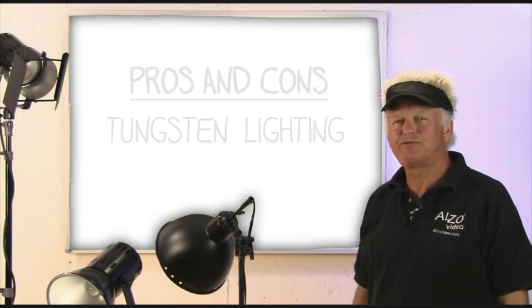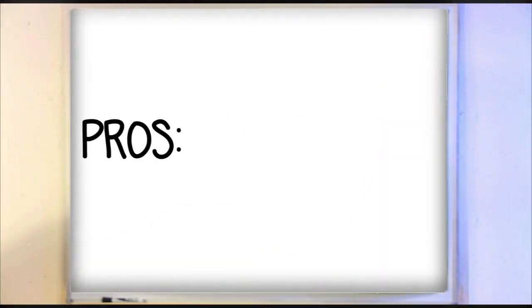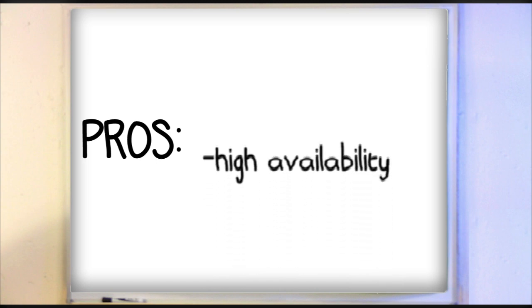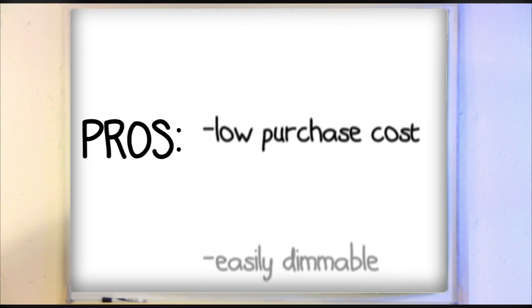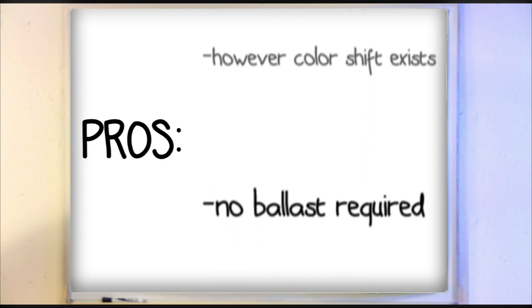Now let's review the pros and cons of tungsten lighting. The pros are high availability and low purchase cost. They're easily dimmable, but of course they do color shift and there is no ballast required.